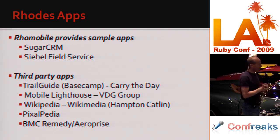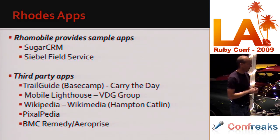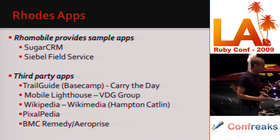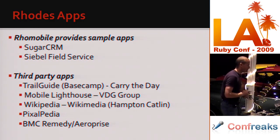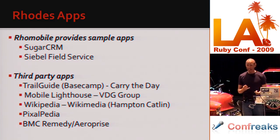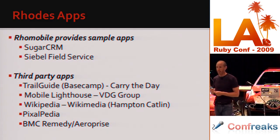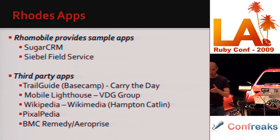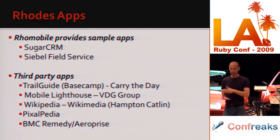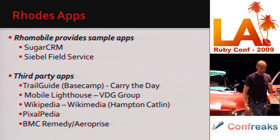We provide sample apps for SugarCRM and Siebel Field Service, and we're extending the Siebel sample to cover all of Siebel CRM. There's a third-party app for Basecamp. There's a company called Carrier the Day that had a Windows Mobile product called Trail Guide — they're a small ISV that didn't have resources to write separate iPhone, BlackBerry, Android, and Symbian apps, so they rewrote it with Rhodes.